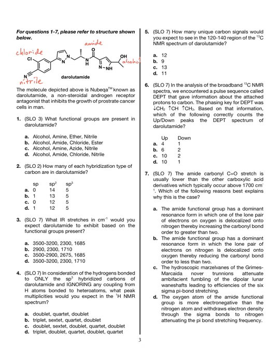You can then look at your choices and eliminate the distractor answers from functional groups that are not present. There's no ether, there's no ester, there's no azide. So the correct answer here is D.